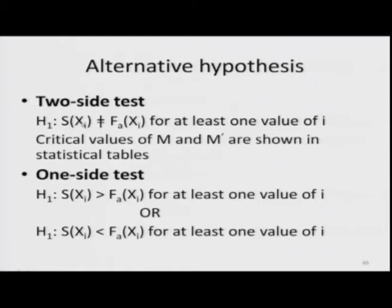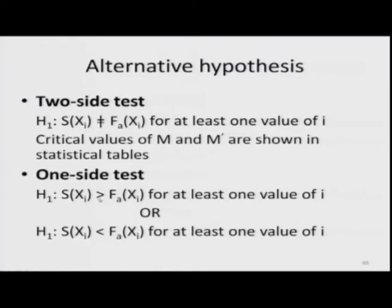The null hypothesis is that the cumulative frequency distribution of the model and the cumulative proportion for the sample are identical. The alternative hypothesis is that S and F are not the same — S is greater than F or S is less than F. The 'not equal to' case is a two-sided test, while specifying S greater than F or S less than F is a one-sided test.